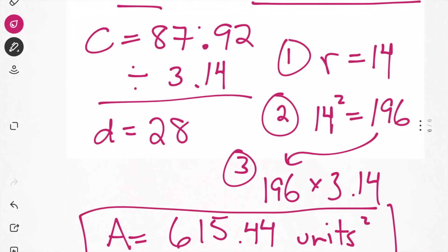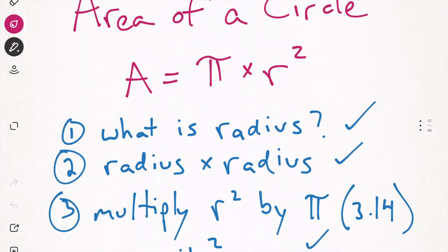So this one has a few more steps. If you're given the circumference, we divide by pi, and that gives us the diameter. If we know the diameter, we divide that by 2, and that gives us the radius. And then once you know the radius, you follow the same steps we were doing before. So let's look at those steps once again. Step 1: what is the radius? Step 2: square the radius. Step 3: multiply the radius squared by pi, and that gives you your area.